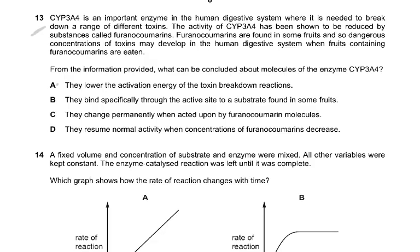Question 13: CYP3A4 is an enzyme in the human digestive system where it is needed to break down a range of different toxins. The activity of CYP3A4 has been shown to be reduced by substances called furonocoumarins found in some fruits. As a result, dangerous concentrations of toxins may develop when fruits containing furonocoumarins are eaten, because the enzyme can no longer break them down effectively.